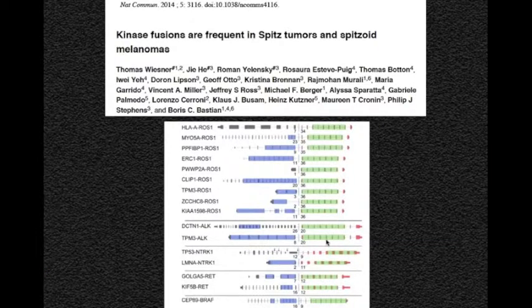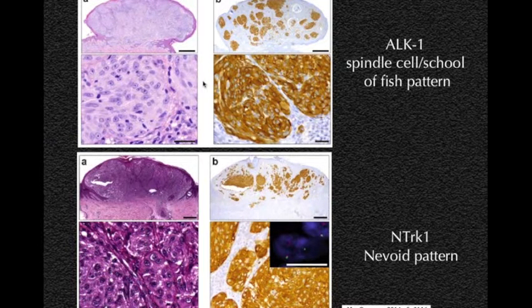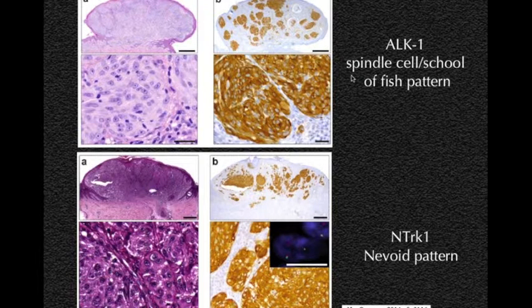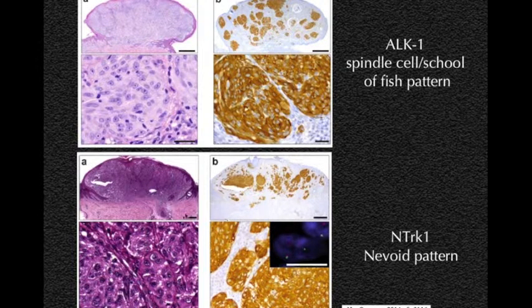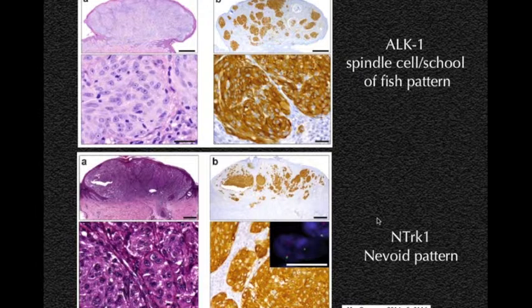So if you see a nevus and look down the microscope and see this bimodal pattern of epithelioid cells and smaller cells, it could reflect a genetic alteration associated with BAP1 mutation. There is also a great article from Dr. Wiesner's group describing that other patterns — like if the nevus has a spitzoid lesion with a spindle cell or school-of-fish pattern — it is likely to have an ALK mutation, and if it has a more sclerotic and epithelioid morphology, it could have the NTRK1 mutation.